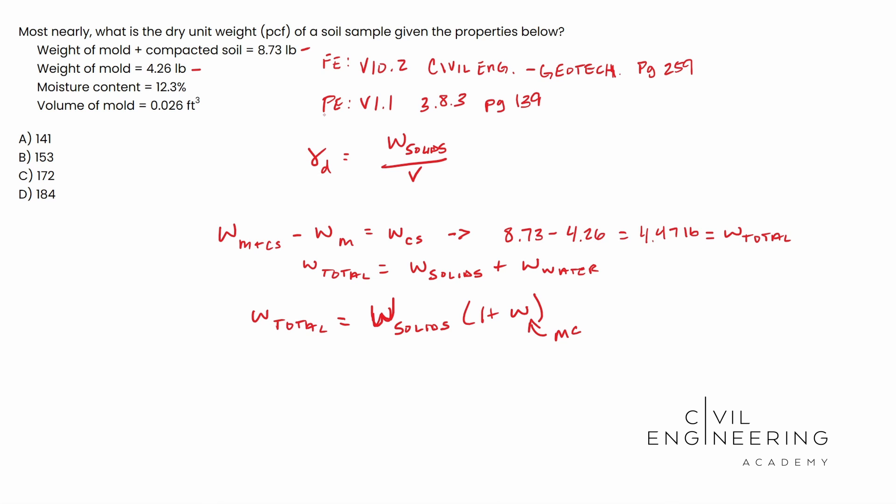And notice, we have no unknowns here. We have the weight total right here. And then we have our moisture content given to us in the problem, 12.3. And all of a sudden, we can solve for this guy. We can solve for the weight solids, which you remember up here is what we're solving for. And so when you do that, we're going to end up with something that looks like this. 4.47 pounds is equal to the weight solids times one plus our moisture content, which is 0.123. Make sure you write it in decimal form and not the percent. And so when you solve for W_s, this ends up being 3.98 pounds.